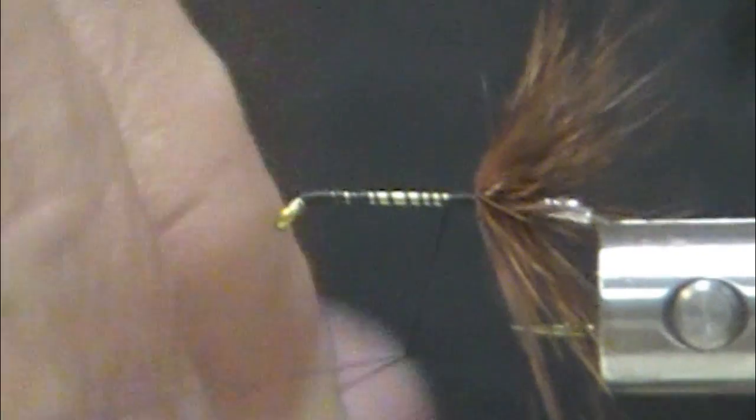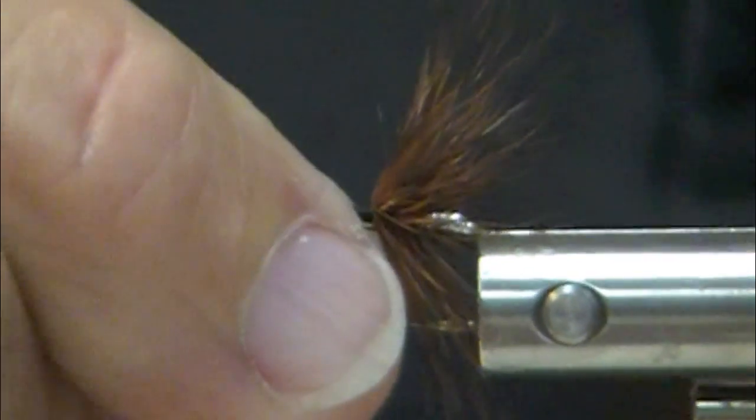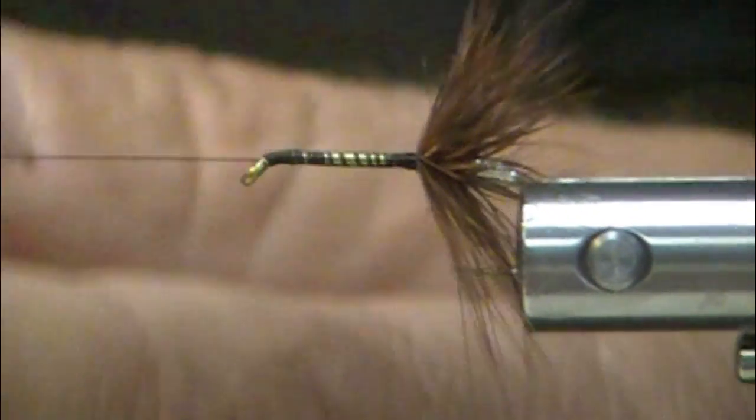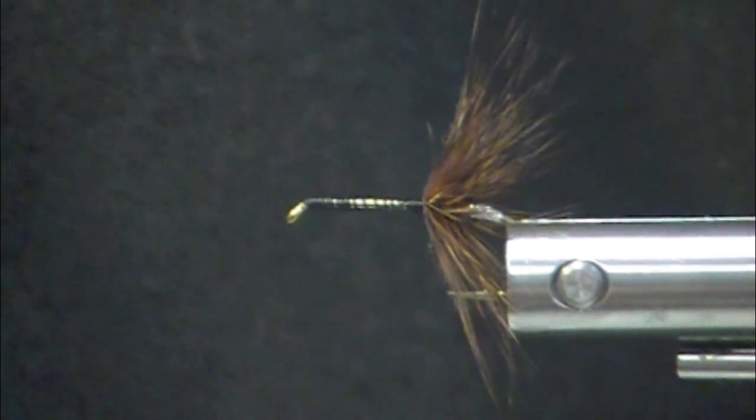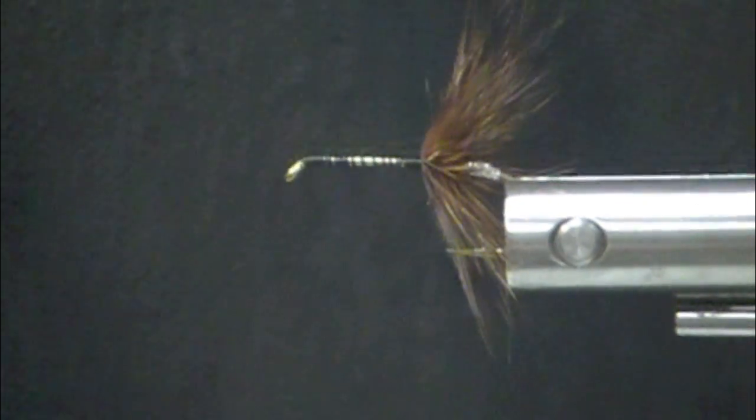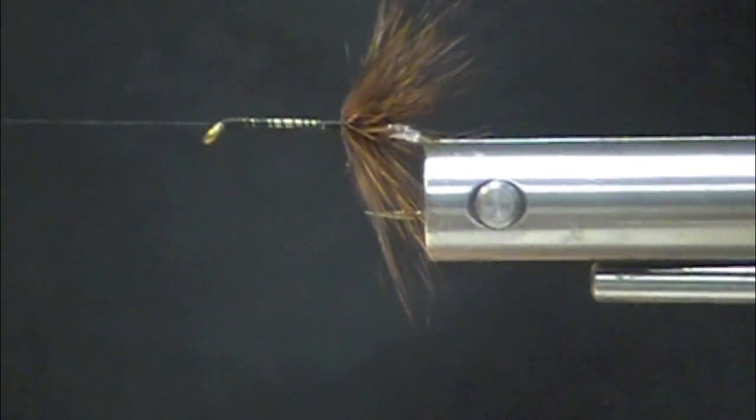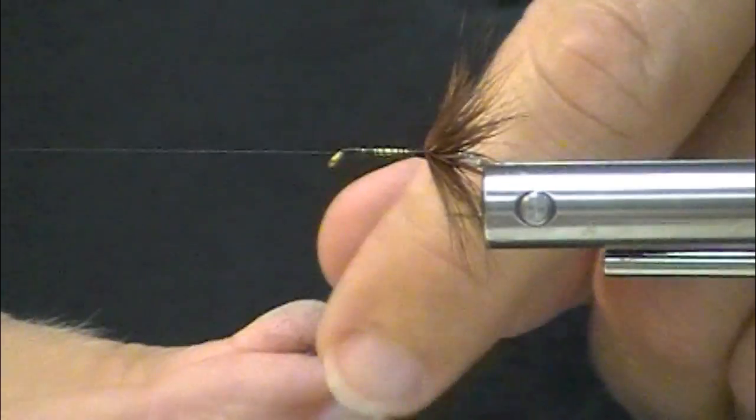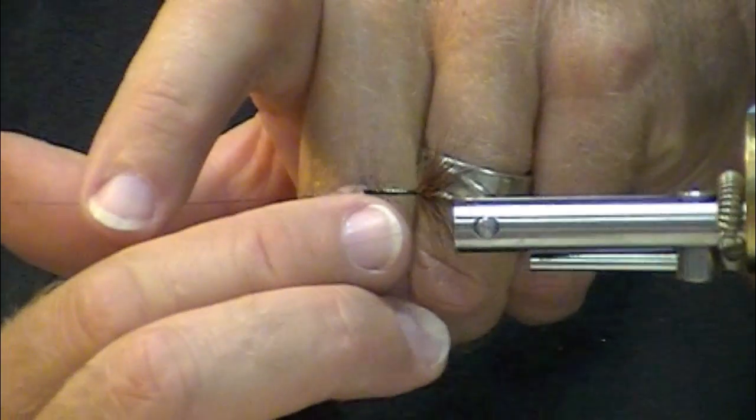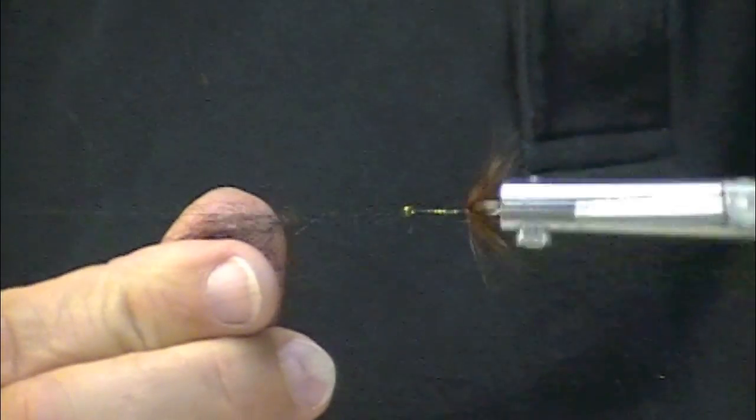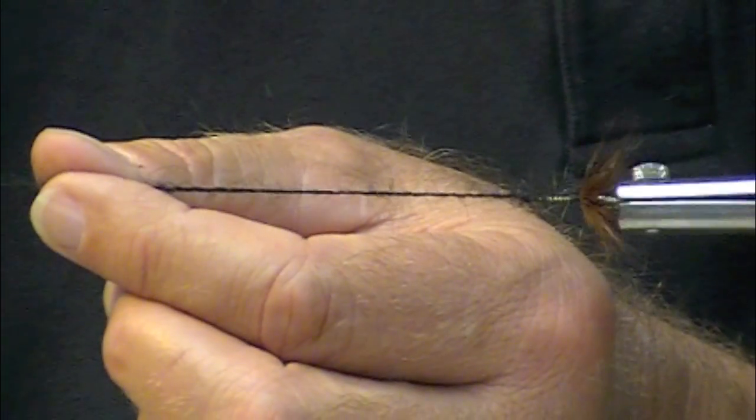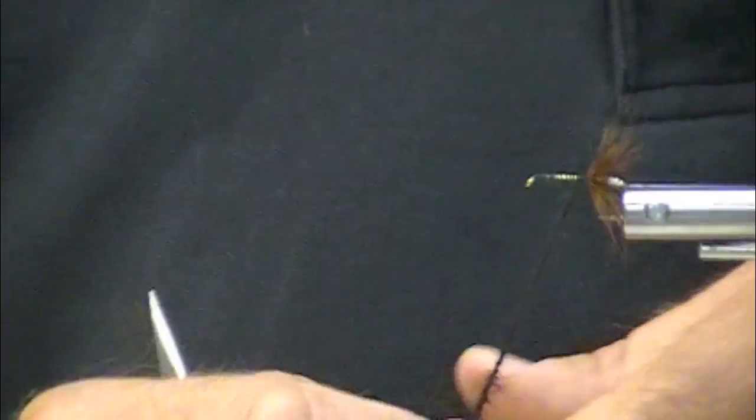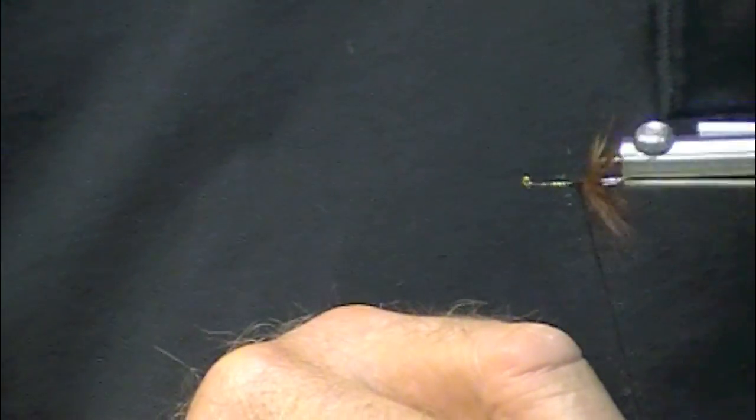While I'm doing that, I'm going to spin on a little bit of STS Tri-Lobal dubbing, which I happen to have handy. So hook sizes: I would encourage you to avoid a size 4, even if they take it, and here's why. They're not real big fish, and those are pretty big hooks, and you're gonna have a lot of injured fish.